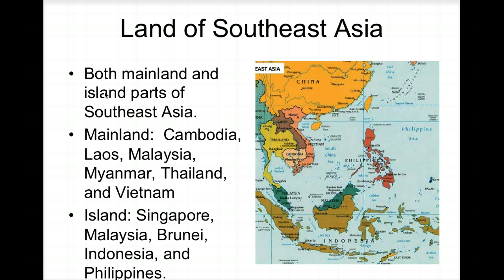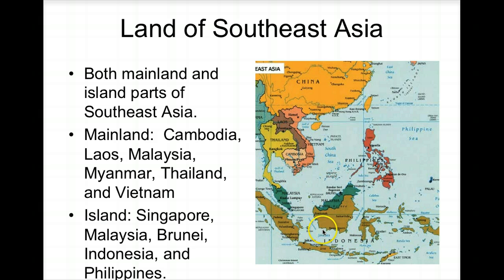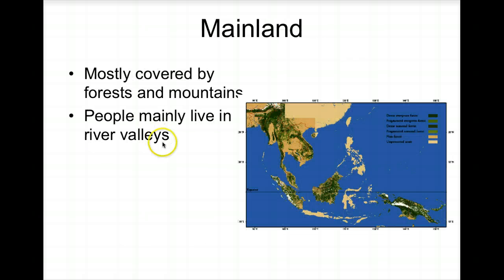The land of Southeast Asia has both a mainland and island part. The mainland is composed of Burma or Myanmar, Thailand, Laos, Vietnam, and Cambodia. Then we have Malaysia, which is part island and part mainland, Singapore, Indonesia — a bunch of little islands spread out — Brunei, and the Philippines. That's all of Southeast Asia.